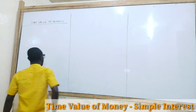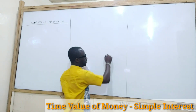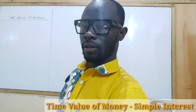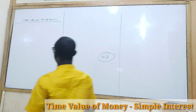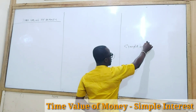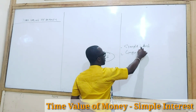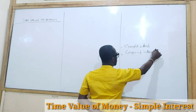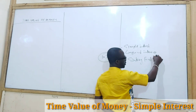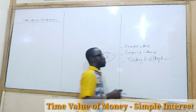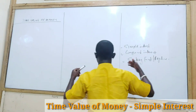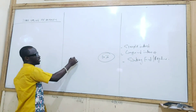Time value of money is 10% of the syllabus, and in this topic we are going to discuss simple interest, compound interest, and sinking funds — also referred to as regular savings. The idea is to find out how much money you will have in the future taking into consideration the interest rates.